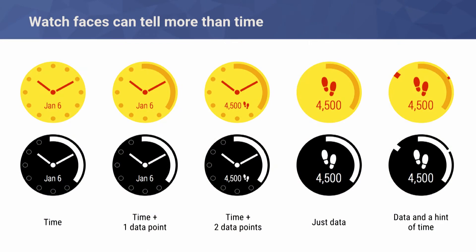For every stage of your watch face, we have something called always-on or ambient mode. It saves power and stays on when you don't interact with it. It's a very good way to get glanceable data and information without actually interacting with the watch face — a nice way to save power and have a longer user experience.